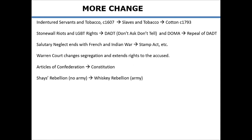More change: indentured servants are replaced by slaves as labor — they're still planting tobacco; cotton comes later. The Stonewall riots and gay rights: Don't Ask, Don't Tell was passed and then repealed about 20 years later. Salutary neglect ends — big change — leading to the Stamp Act. The Warren Court changes segregation and extends rights to the accused in cases like Mapp vs. Ohio, Miranda, and Gideon vs. Wainwright. The Articles of Confederation are changed by the Constitution — Shays' Rebellion showed no army under the Articles, while the Whiskey Rebellion proved the U.S. now had one.